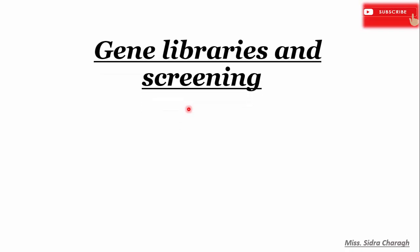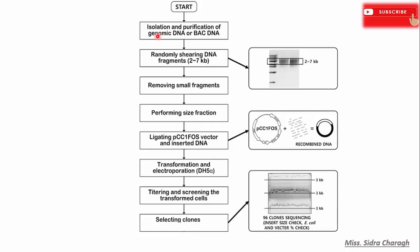Today we will discuss gene libraries and screening. Before we see how we can construct a gene library, let's see what main steps are required. First is isolation and purification of genomic DNA or bacterial artificial chromosome DNA. After isolation and purification, we do DNA shearing into two to seven kb fragments. Then we remove small fragments, perform size fractionation, select our genomic DNA, and ligate it into a vector to form recombinant DNA.